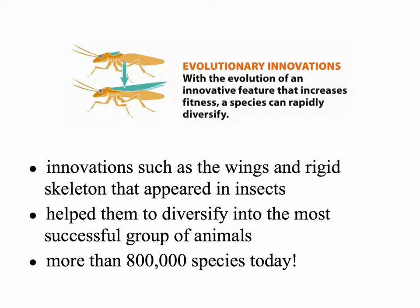One example of this is the innovation of wings and a rigid skeleton structure that appears in insects. The hard skeleton is very protective, and wings allow these animals to reach brand new resources that were not available to them before. This type of diversification has led to more than 800,000 species of insects alive today.